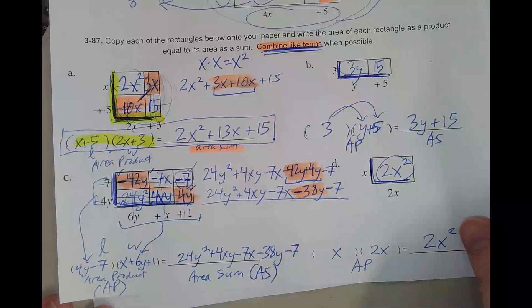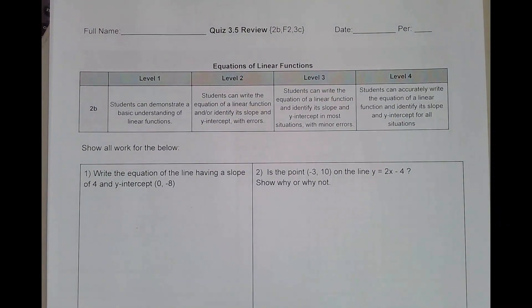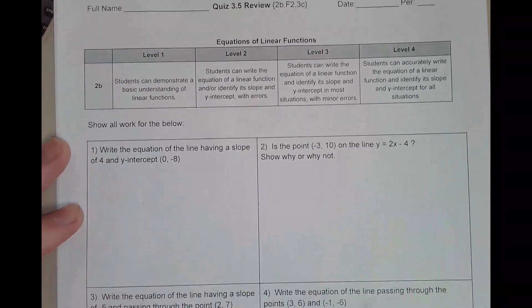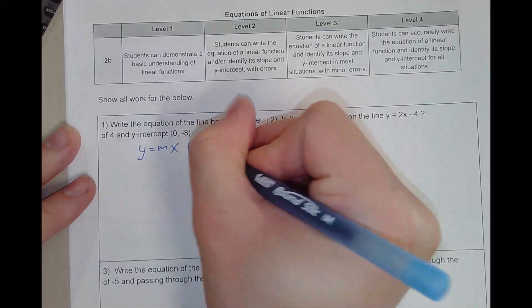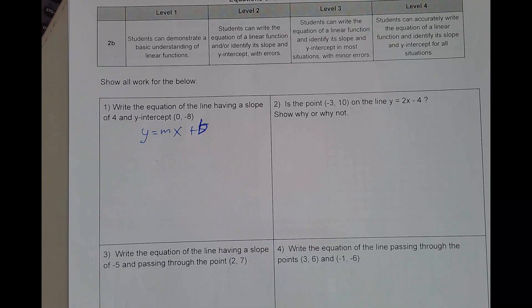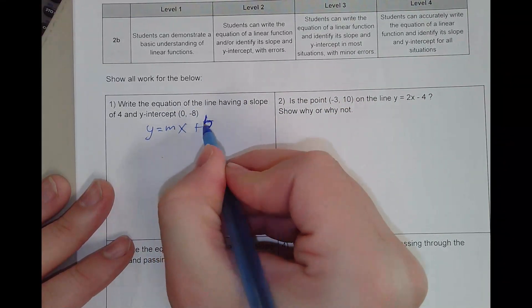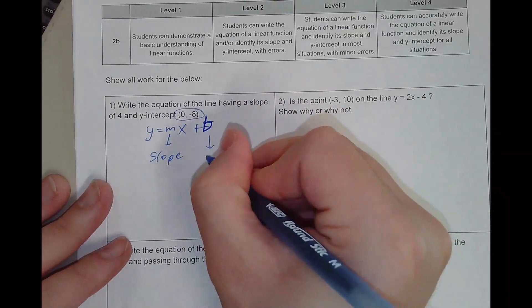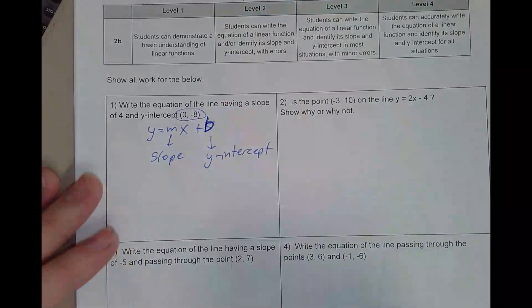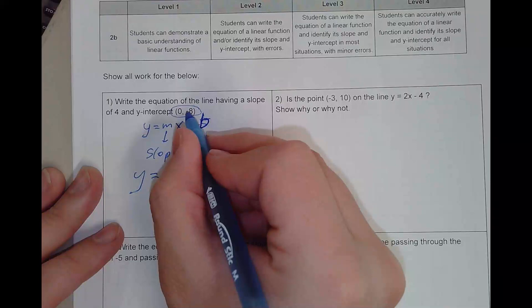Now let's review for the quiz. I'm going to move fairly quickly — you can rewatch this video. The first standard: write the equation of a line y equals mx plus b with a slope of 4 and a y-intercept of (0, −8). We know m is the slope and b is the y-intercept. The slope is 4, so 4 goes in front of x, and the y-intercept is negative 8, so the equation is y equals 4x minus 8.